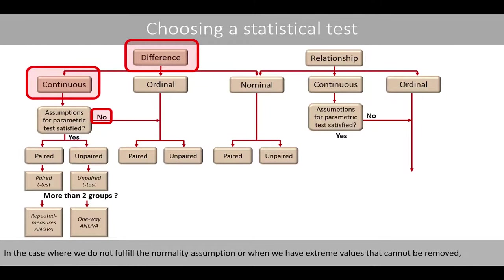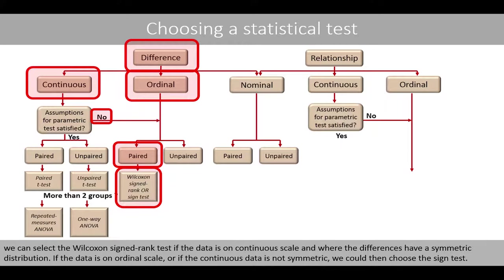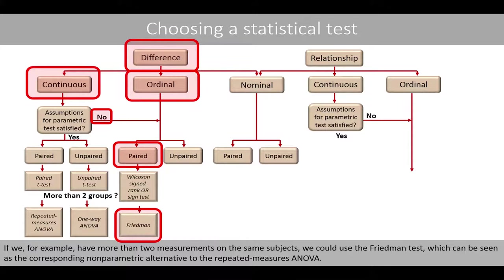In the case where we do not fulfill the normality assumption, or when we have extreme values that cannot be removed, or if our measured variable has an ordinal scale, a nonparametric test is more appropriate. For a paired design with two measurements on the same subject, we can select the Wilcoxon signed-rank test if the data is on continuous scale and the differences have a symmetric distribution. If the data is on ordinal scale or if the continuous data is not symmetric, we could choose the sign test. If we have more than two measurements on the same subject, we could use the Friedman test, which is the corresponding nonparametric alternative to repeated measures ANOVA.